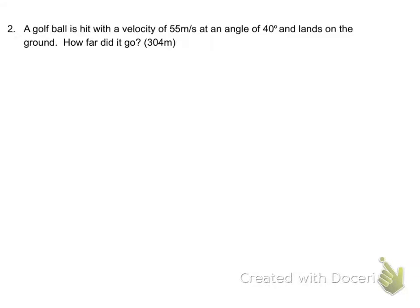Okay, so here's a problem where a golf ball is hit with a velocity of 55 meters per second at an angle of 40 degrees. It lands on the ground and wants to know how far the golf ball goes. The first thing I look at is it says it lands back on the ground.